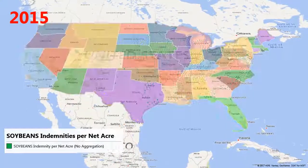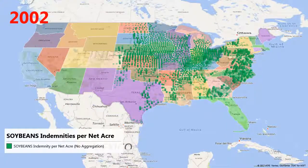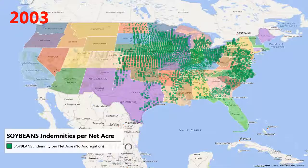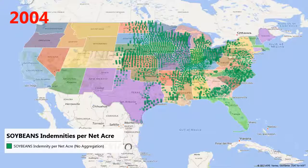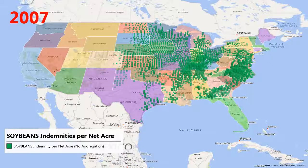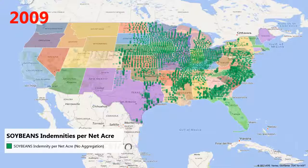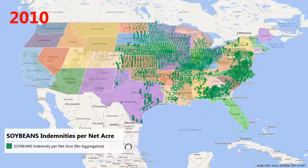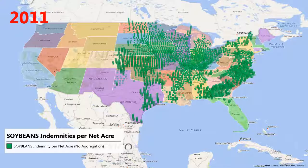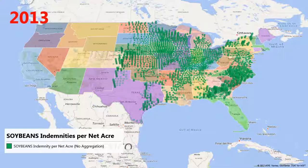This scene shows national soybean indemnities received by each county from 2001 to 2015. Similar to corn, indemnities received tend to be regional in nature and are largely dependent upon weather events such as drought, flooding, frost, and hail. During the 15-year time period, the indemnities received were the lowest in 2001 at about 127 million, and highest in 2008 at about 2.4 billion.